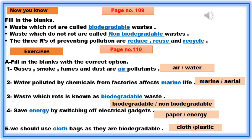Fill in the blanks on page number 109: waste which rots is called biodegradable waste; waste which does not rot is called non-biodegradable waste. Number three: the three R's of preventing pollution are reduce, reuse, and recycle. Now move on to page number 110 exercises.